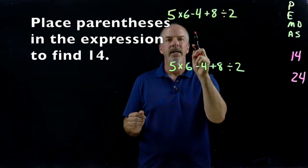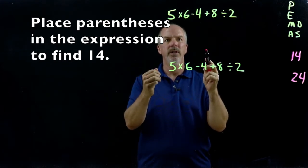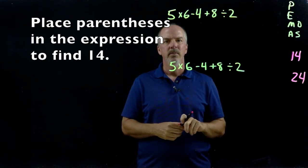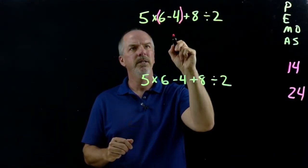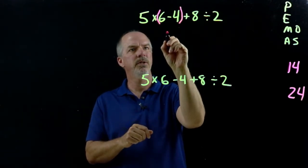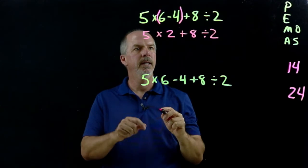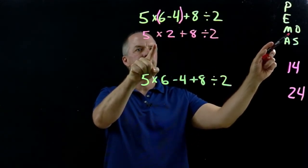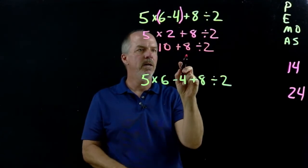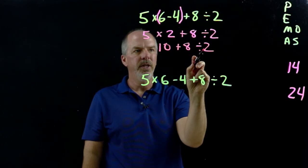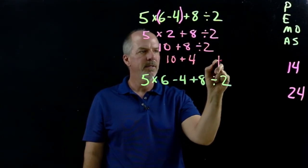We're asked how can we find an evaluated answer of 14 by inserting parentheses. Where would the parentheses need to be placed in order for us to get 14? If we put the parentheses around 6 minus 4, that forces us to do the parentheses first. So 6 minus 4 is 2. Now order of operations — multiplication or division, whichever comes first. So we have 5 times 2 is 10, plus 8 divided by 2 is 4. That gives us an answer of 14.